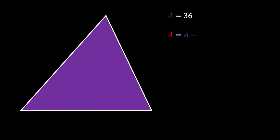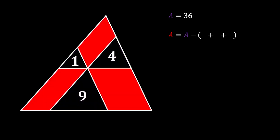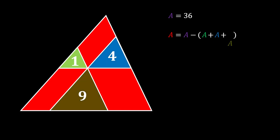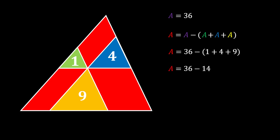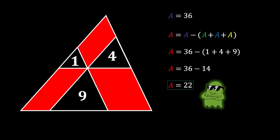The red shaded area is equal to the area of our big triangle minus the combined areas of our three inscribed triangles: the green triangle with area 1, the blue triangle with area 4, and the yellow triangle with area 9. Substituting our values, we get that the red shaded area is equal to 22 square units, and this is our solution.